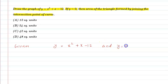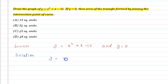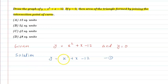So let us see the solution part of this question. We have y is equal to x square plus x minus 12 — this is equation number 1. We have to plot the graph. This is a quadratic polynomial.